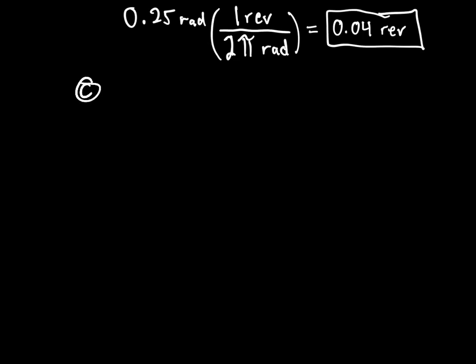For Part C: how long would it take to stop the merry-go-round given an applied braking force? Now I'm stopping the merry-go-round, so I no longer know the acceleration. I can still use change in time equals omega-final minus omega-initial over alpha, but I need to find the new alpha.